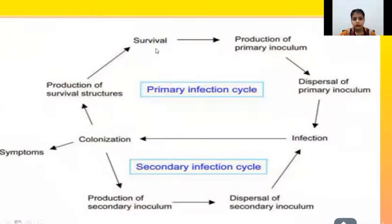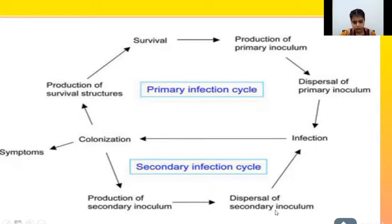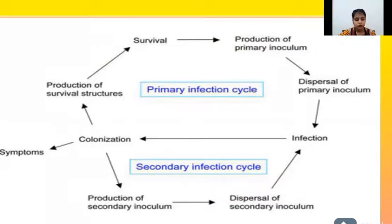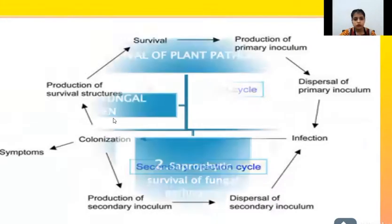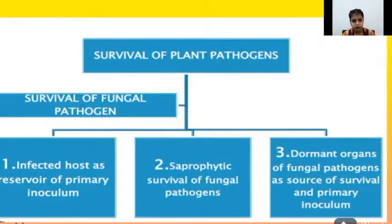The diagram shown here differentiates the infection cycle into two parts: the primary infection cycle and the secondary infection cycle. In the primary infection cycle, there is survival, then production of primary inoculum, dispersal, infection and colonization, then production of survival structures. Similarly, in the secondary infection cycle, there is colonization, production, dispersal, infection, and colonization again, after which we can see visual symptoms.